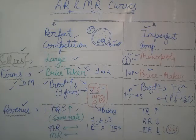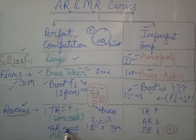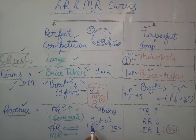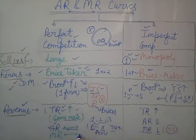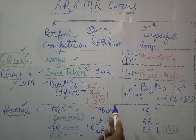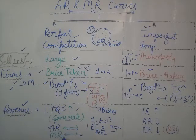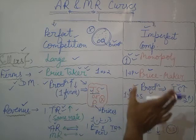For average revenue in perfect competition — since prices are not changing, the per unit revenue generated will also be constant, because of the same prices. Similarly, for marginal revenue — if you introduce an additional unit, prices remain the same, which means marginal revenue will also be constant in case of perfect competition.